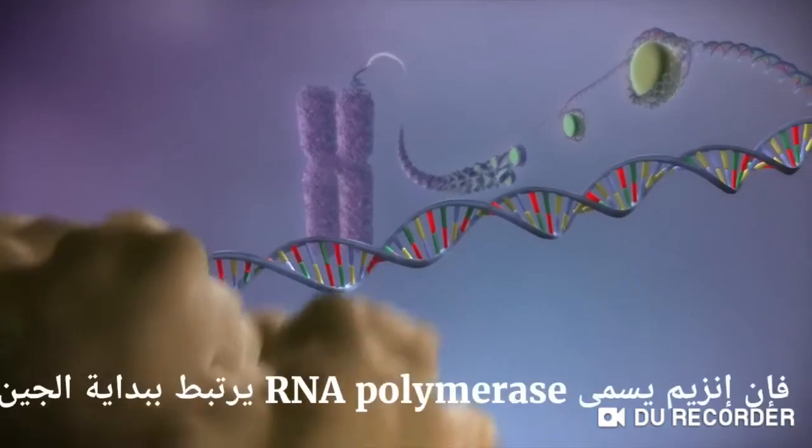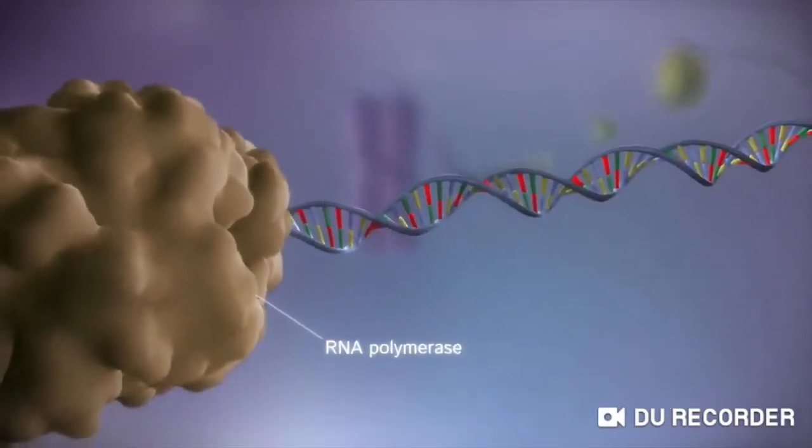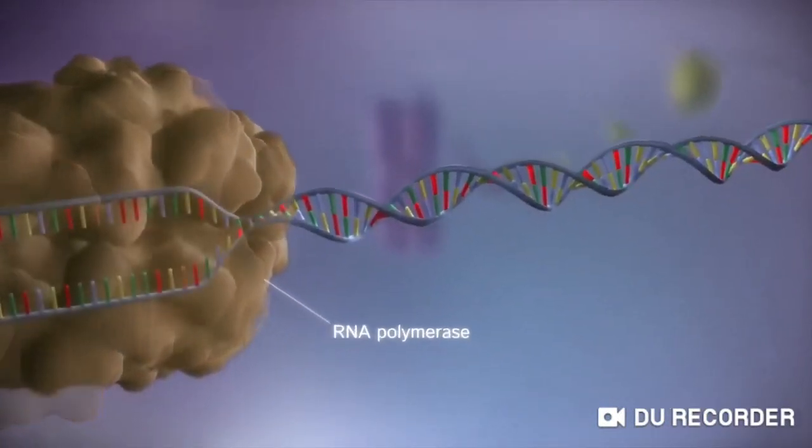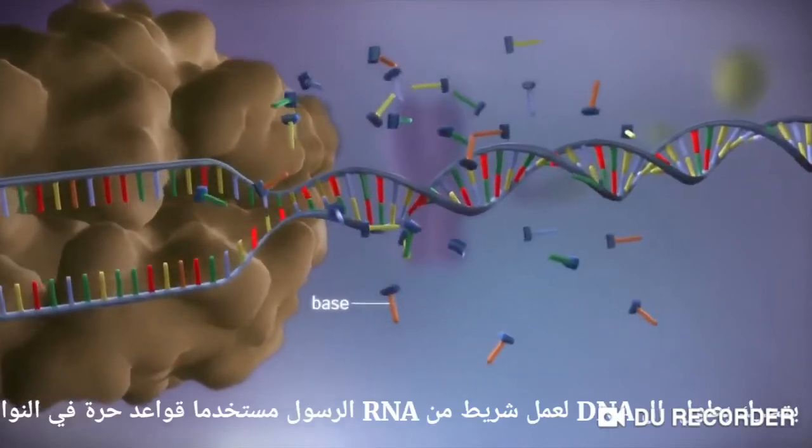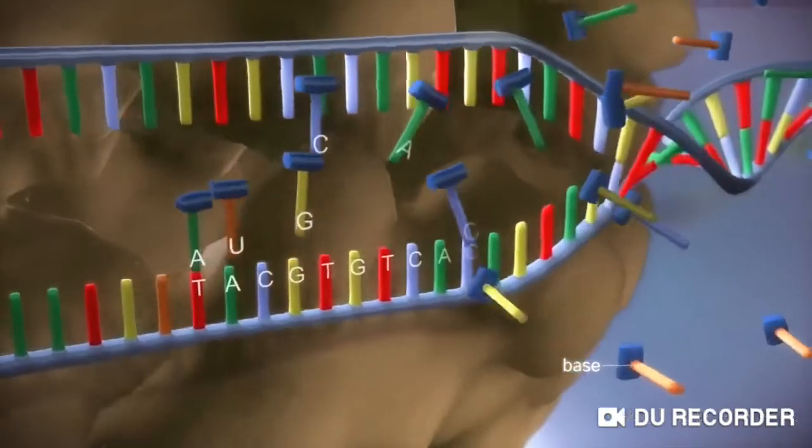When a gene is switched on, an enzyme called RNA polymerase attaches to the start of the gene. It moves along the DNA, making a strand of messenger RNA out of free bases in the nucleus.